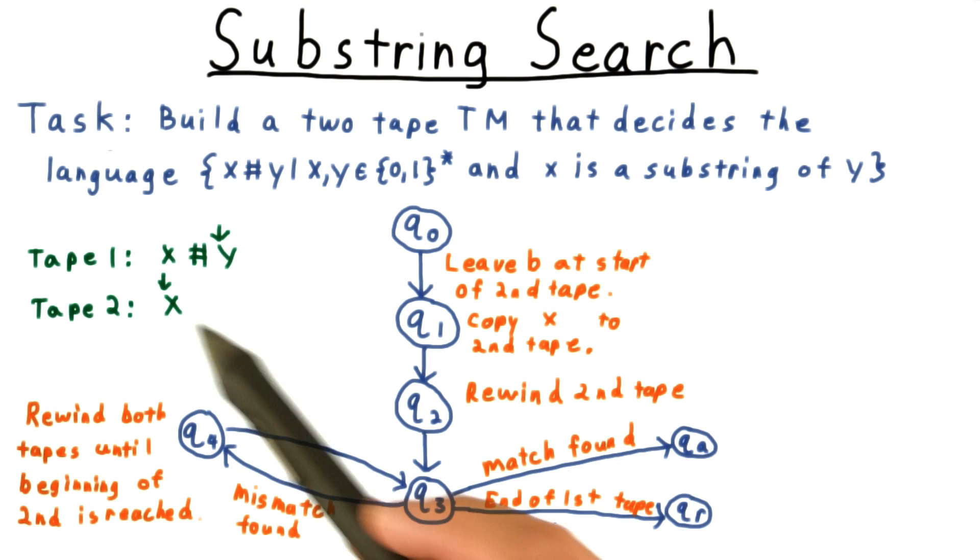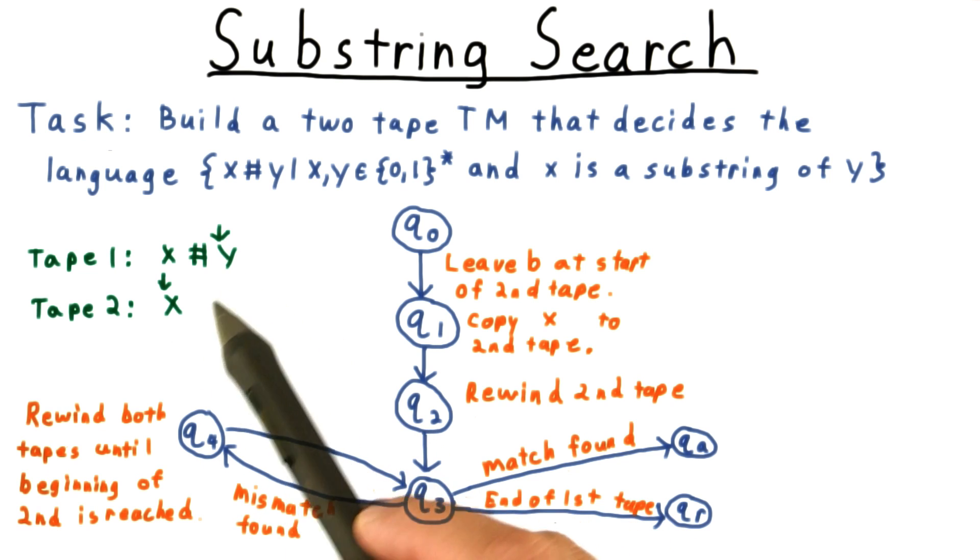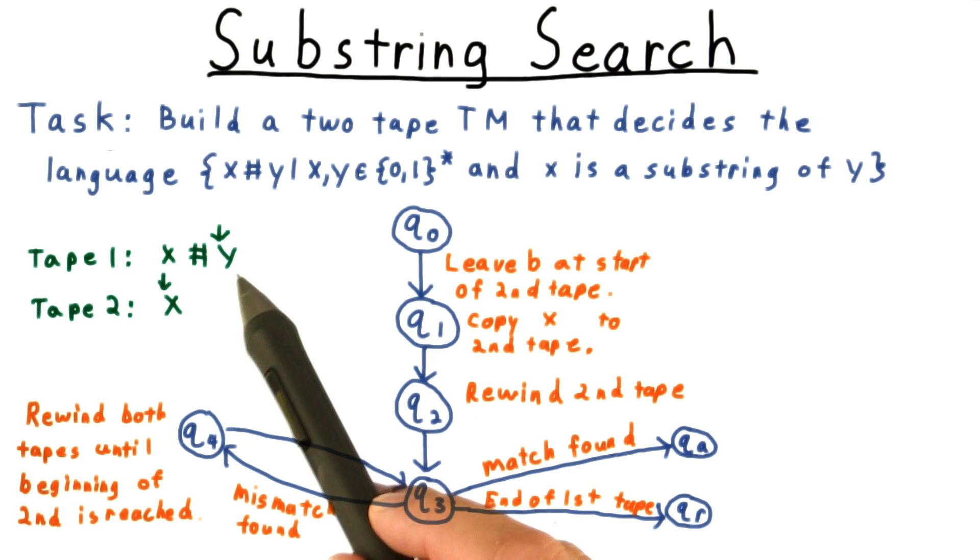And if we find a mismatch between these two at any point, then we rewind one step on tape 2. And then we rewind both tapes until we get back to the beginning of x. And then we can repeat. This time we'll be checking x against a substring of y that's one further space down.